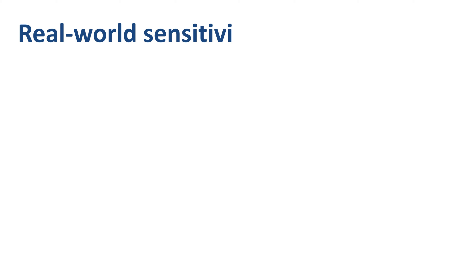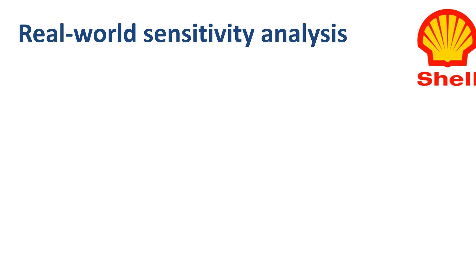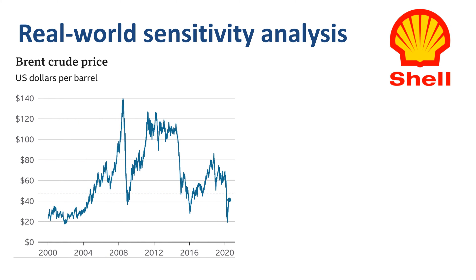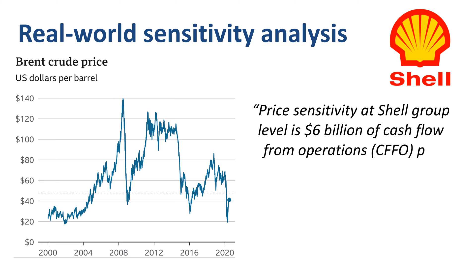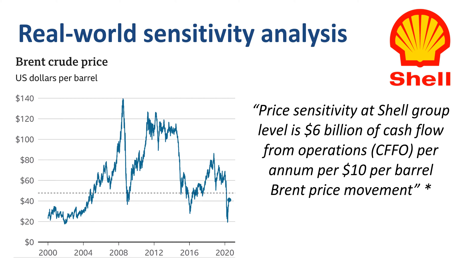The clearest real-world example of sensitivity analysis that I have ever seen is one by oil and gas company Shell about the impact of changes in the oil price. The price sensitivity at Shell group level is $6 billion of cash flow from operations per annum per $10 per barrel Brent oil price movement.